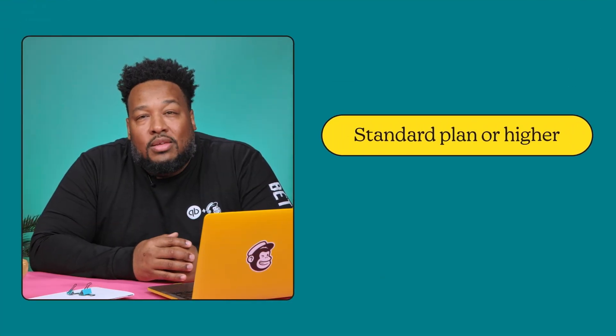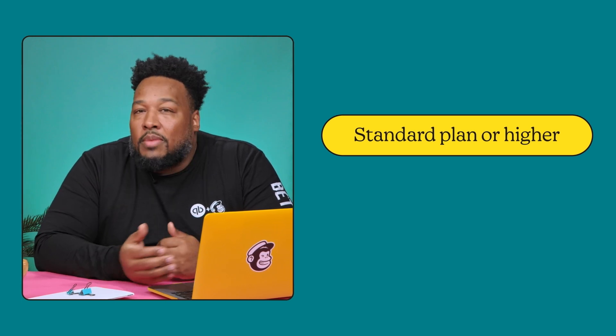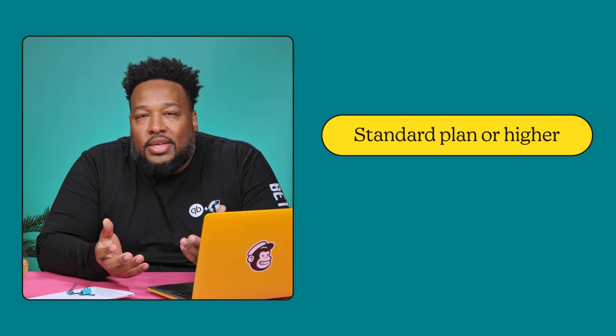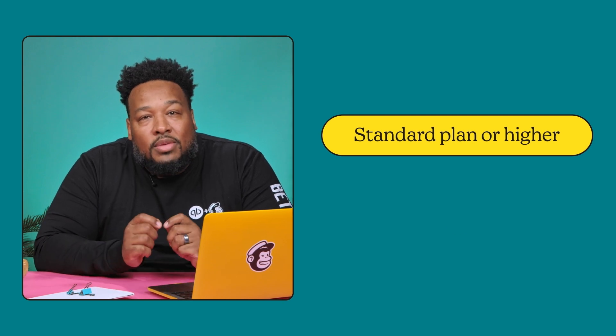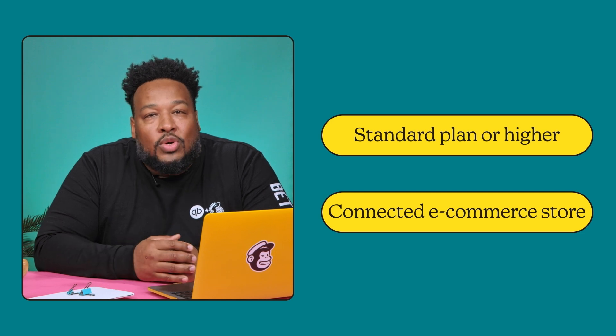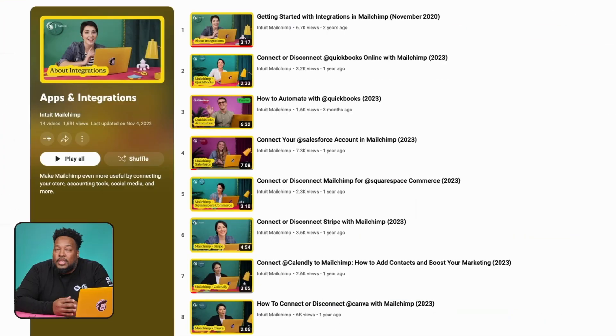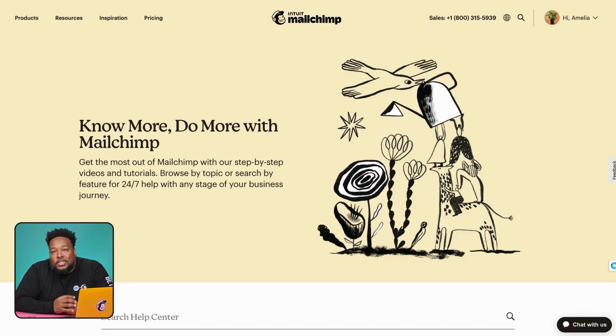But before we get started, here's what you need to know to follow along with this tutorial. Predictive segmentation is a paid feature available on standard plans or higher. If you have any questions about plans and their capabilities, check out our pricing page. For Mailchimp to accurately predict who your best customers may be, you'll need to connect an e-commerce store with plenty of relevant data. For guidance on connecting your store to Mailchimp, visit the integrations playlist on our YouTube channel, or simply stop by our help center.